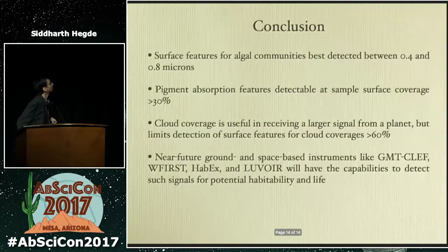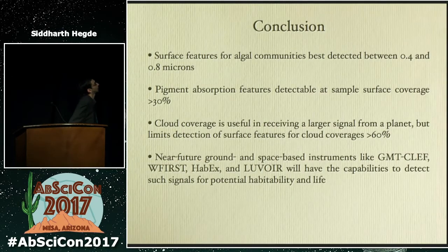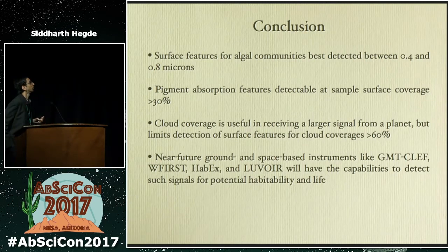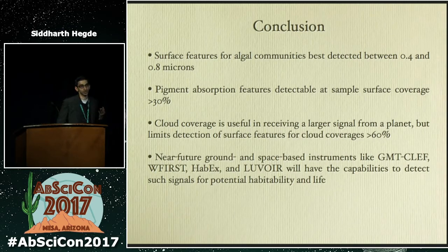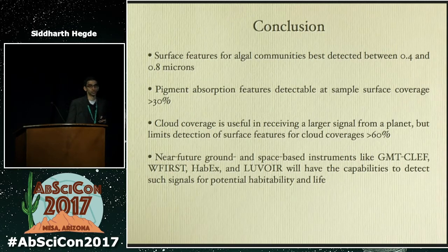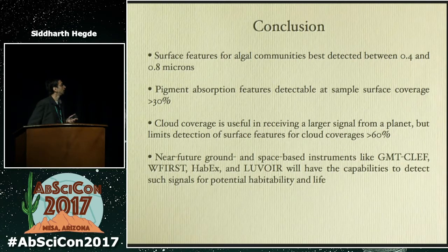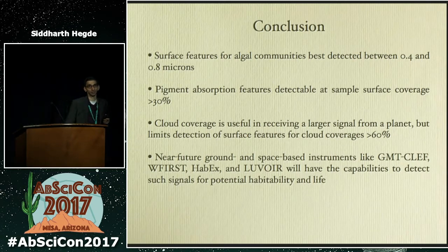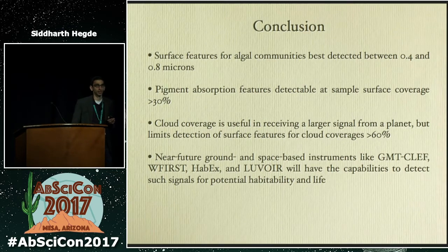In summary, surface features are best detectable in the 0.4 to 0.8 micron band, with surface coverage greater than 30% and a cloud fraction of less than 60%. Near-future instruments like the GMT CCLIF spectrograph on board the GMT, due online in 2024, along with space missions like WFIRST and LUVOIR, will likely have the capabilities to detect such signatures for habitability and life.